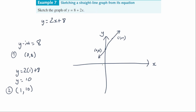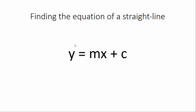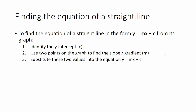Now let's look at finding the equation of a straight line — this formula is very important: y equals mx plus c. The steps are: first, identify the y-intercept; second, use two points on the graph to find the slope or gradient m; third, substitute these two values into y equals mx plus c. Pause the video to write these down.